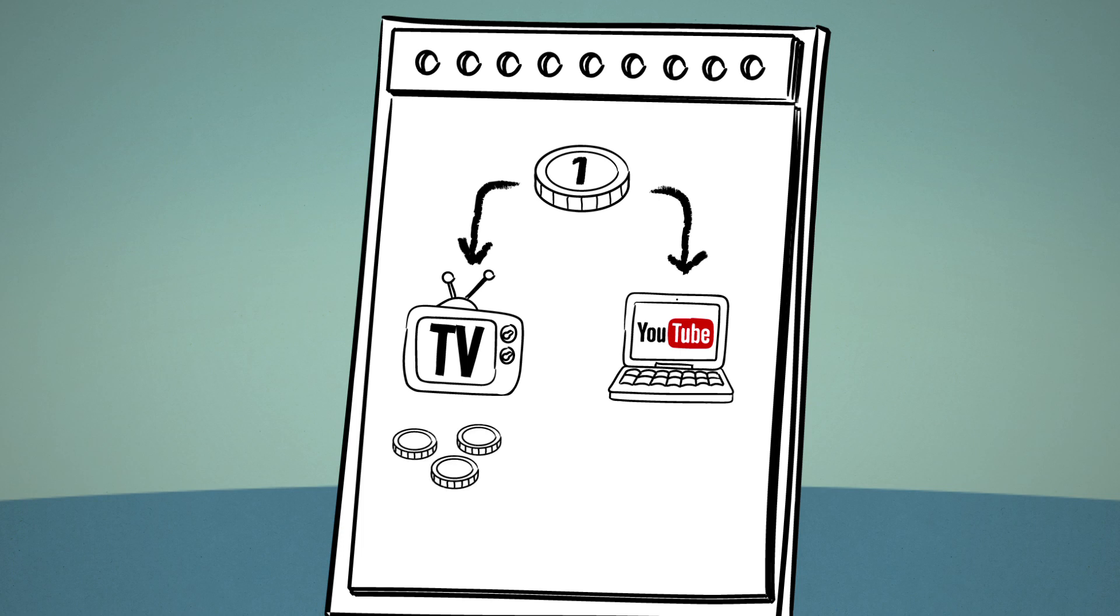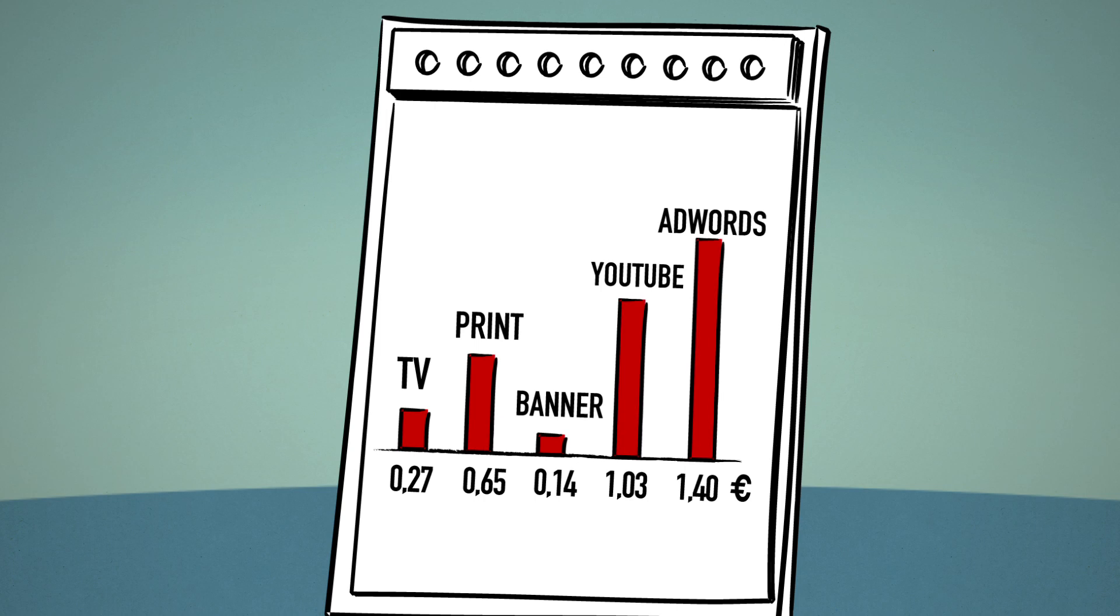While TV pays back 27 cents in immediate sales, YouTube proves to be clearly more efficient, returning 1.03 euro on the short term. This makes YouTube the most efficient medium in the media mix after Google AdWords.